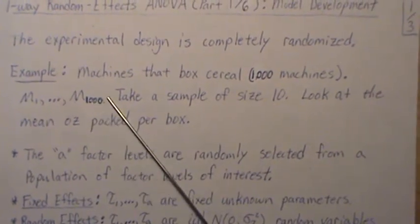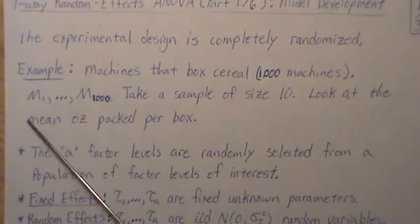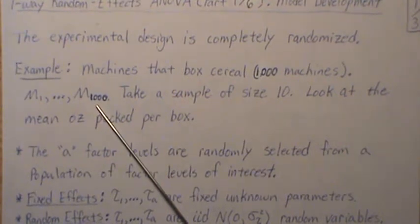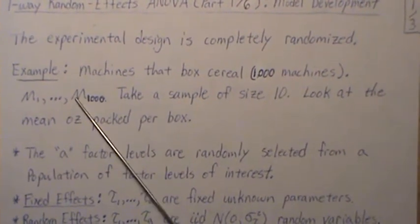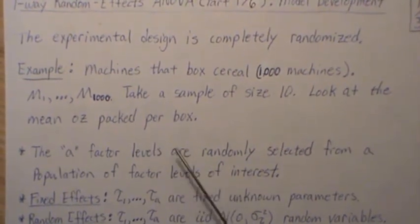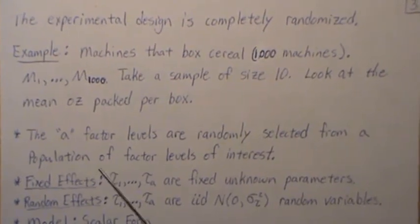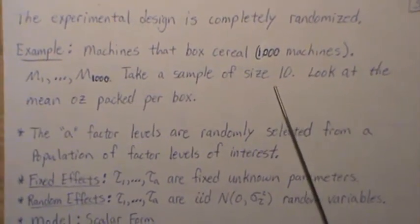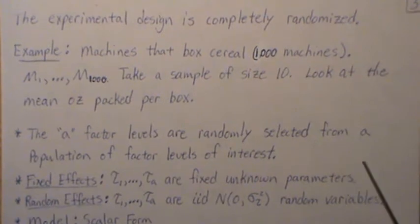As a simple example, consider machines that box cereal. Let's say there are a thousand machines M1 through M1000, and we feel like they all fill boxes similarly. We take a sample of size 10 of these machines and look at the mean ounces packed per box. The factor levels are randomly selected from a population of factor levels of interest, so A equals 10 here.